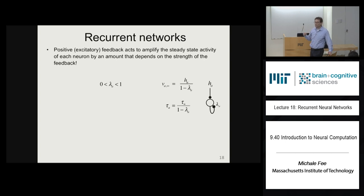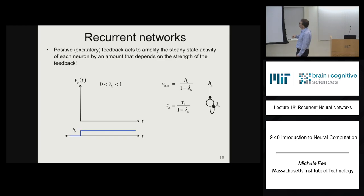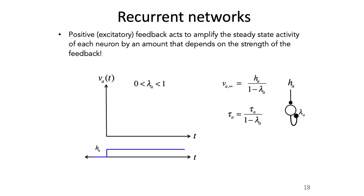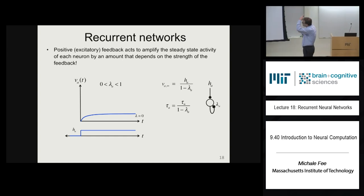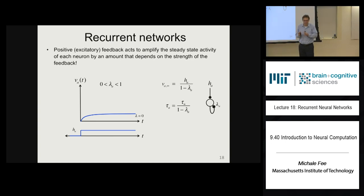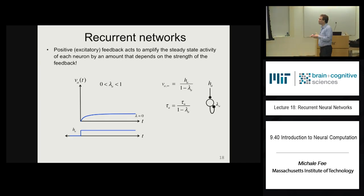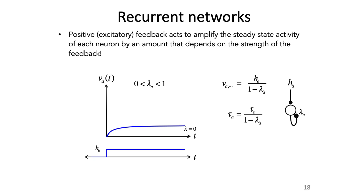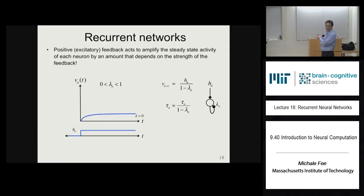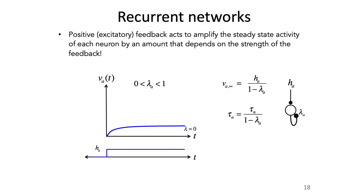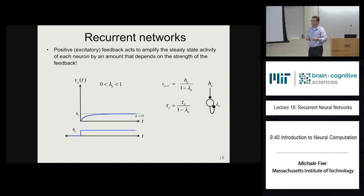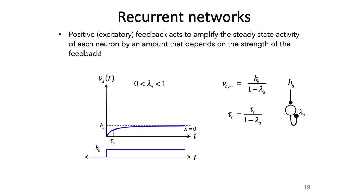Let's look at solutions for lambda between zero and one, plotting v as a function of time when the input steps up from zero and is held constant. For lambda equals zero — no autapse — the solution is just simple exponential relaxation to v_infinity, which is just h, the input, with time constant tau. That makes sense.